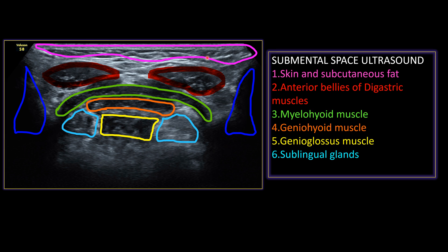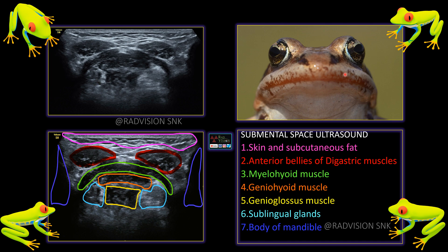We will compare with the actual frog face so you can clearly understand all the components of the submental space that mimic the frog face view. Both eyes of the frog are depicted by the anterior belly of the digastric. The mouth outline is the mylohyoid muscle. The superficial floor of the mouth is the geniohyoid, the deep part is the genioglossus, and laterally the bulgings are the sublingual glands, with the shadows on either side being the body of the mandibles.